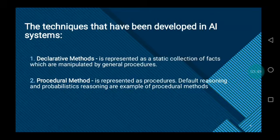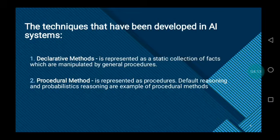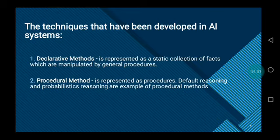The two techniques developed in AI systems fall under two categories. First is declarative methods, represented as a static collection of facts manipulated by general procedures. Facts need to be stored only once and can be used in any number of ways. Facts can be easily added to a declarative system without changing the general procedures. Second is procedural methods, represented as procedures. Default reasoning and probabilistic reasoning are examples of procedural methods. Another example is heuristic knowledge of how to do things efficiently, which can be easily represented.